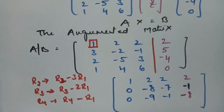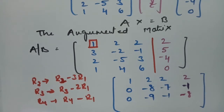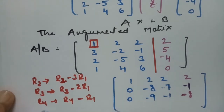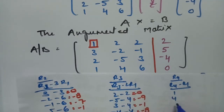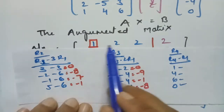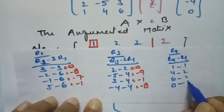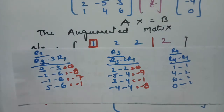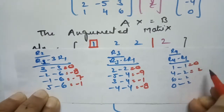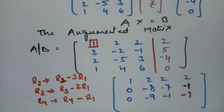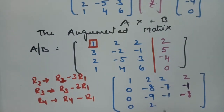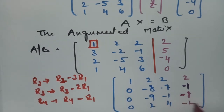The operation on R4 is R4 minus R1. Rho 4 is 1, 4, 6, 0. We subtract R1 which is 1, 2, 2, 2. The resulting values are: 0, 2, 4, and minus 2. So R4 becomes 0, 2, 4 | minus 2. Using the first diagonal element, I made all three below-diagonal entries 0.